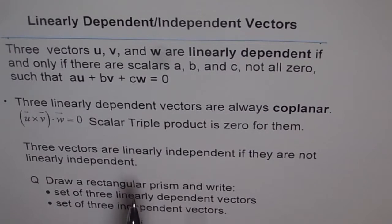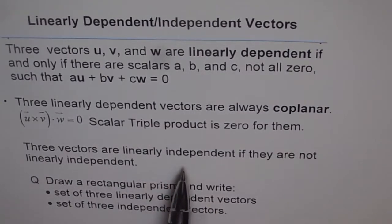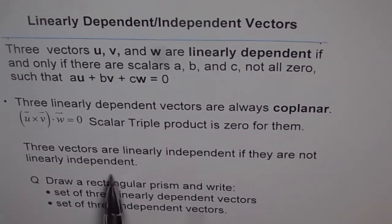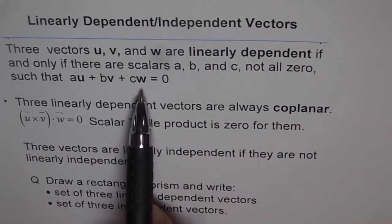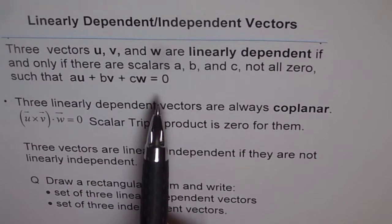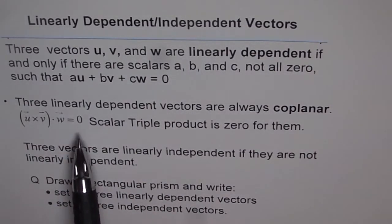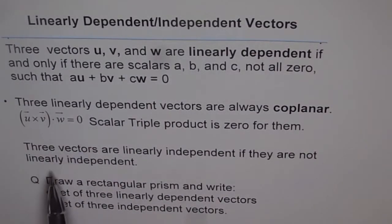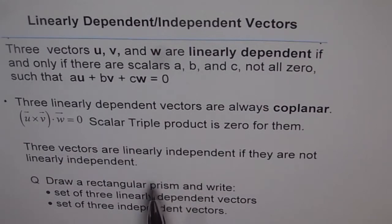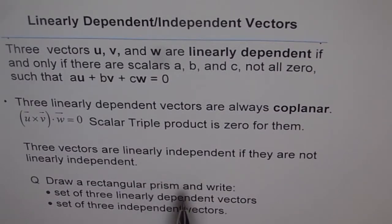We are talking in context of three linearly dependent vectors. Three vectors are linearly independent if they are not linearly dependent — so if this combination is not equal to zero, then we say they are independent. If the vectors are not coplanar, then we say they are linearly independent. Three linearly independent vectors can form bases for R3 and can span any vector in R3.